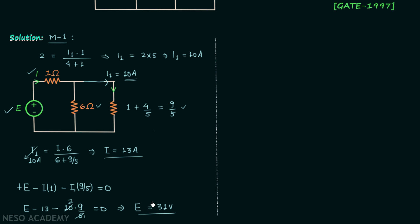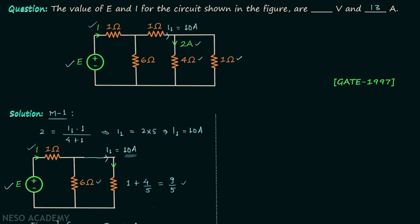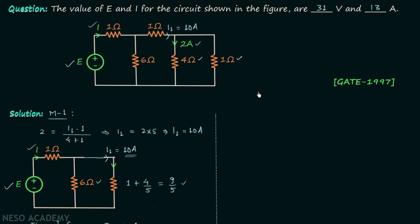So in Method 1 we have calculated both required parameters: voltage E equals 31 volts and current I equals 13 amperes. Now we will move on to method number 2.